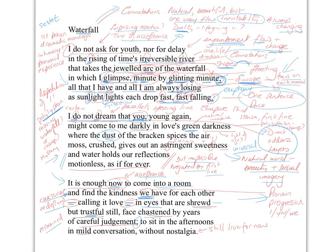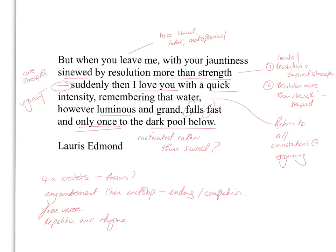They sit in the afternoons in mild conversation, and the idea of 'without nostalgia' is also interesting — they are still living for now. Nostalgia is when you're thinking back fondly to a time that has gone. They're not living in the past; they are actually living now, appreciating each other in that moment. This is important — this isn't a poem where you're meant to feel sorry for the speaker because she's aged and perhaps nearing the end of her life. It's a celebration of the natural cycle of things.